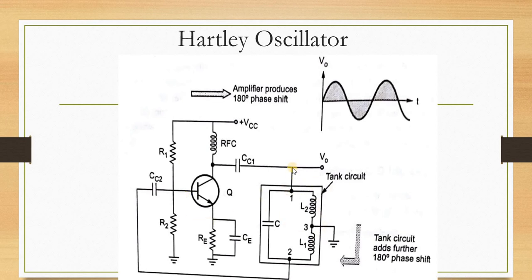Feedback means some part of the output is given back as input. In the feedback path, we use the tank circuit. In the Hartley oscillator, two inductors are connected in series; the junction of these two is grounded. They are connected in parallel with the capacitor, with one end given to the collector and the other to the base.